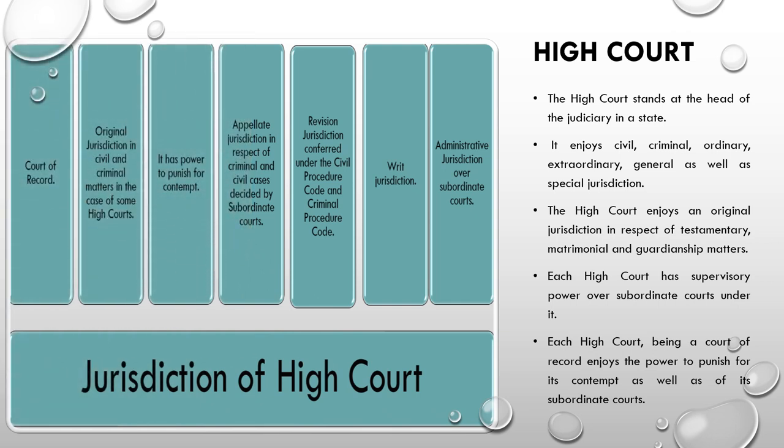The jurisdiction of the High Court includes: first, court of record; second, original jurisdiction in civil and criminal matters in the case of some High Courts; third, power to punish for contempt; fourth, appellate jurisdiction in respect of criminal and civil cases decided by subordinate courts; fifth, revision jurisdiction conferred under the Civil Procedure Code and Criminal Procedure Code; and sixth, administrative jurisdiction over subordinate courts.